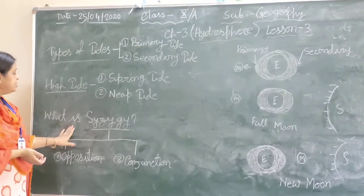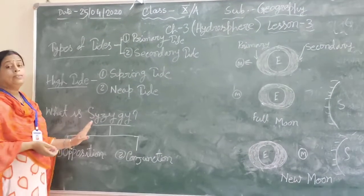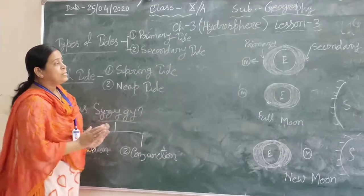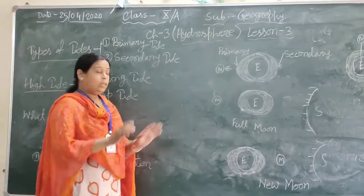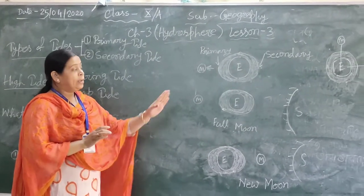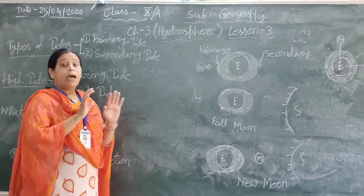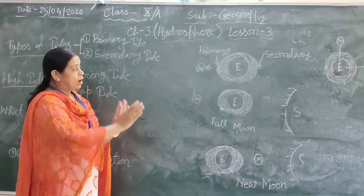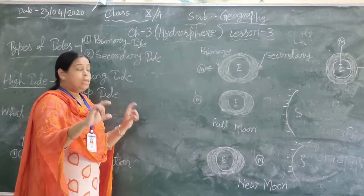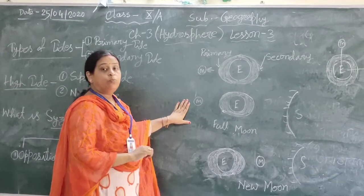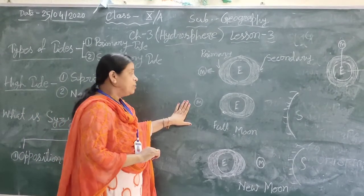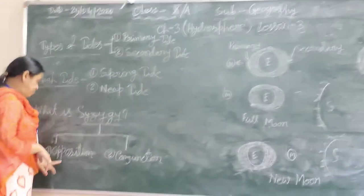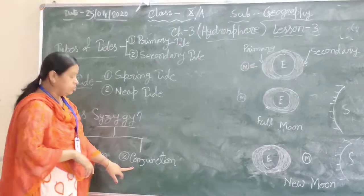What is Syzygy? Syzygy is the position when the moon, the earth, and the sun come along a straight line. This Syzygy position is of two types: opposition and conjunction.